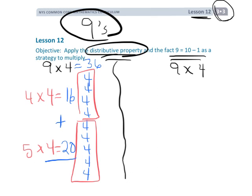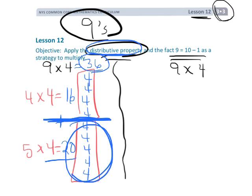So 9 times 4 is 36. So that's one way using the distributive property for how we can learn our 9 times tables by first off breaking it up into 5s, because students know their 5s times tables, and then doing whatever is left over.